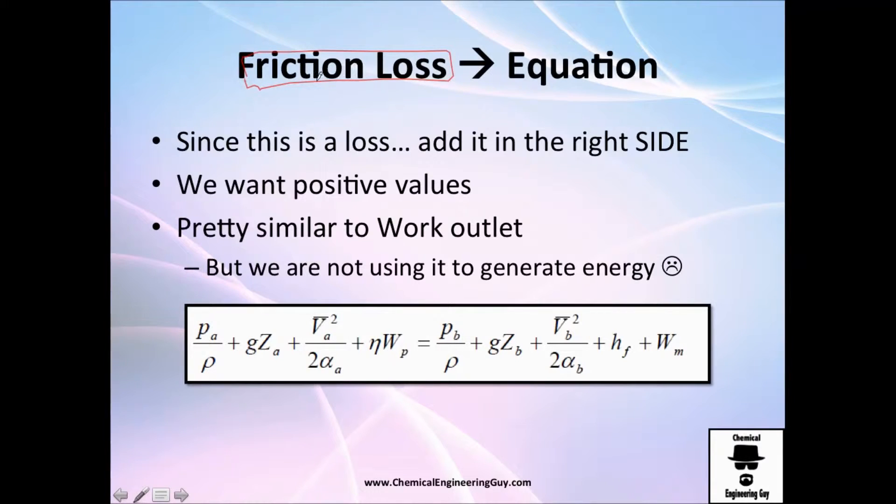As I told you before in the energy outlet, which is the right side, we need to add it here because it's going out, similar to turbine. We cannot add it here because this is inlet, and friction is never inlet. We always lose energy due to friction, and since we want positive values, add it to the right. It's pretty similar to work outlet, but the only little thing is that we are not using this to generate energy in the form of electricity which means money. This is just going to dissipate, will heat a little bit the pipe, will make noise, will crash - all the things I told you before.